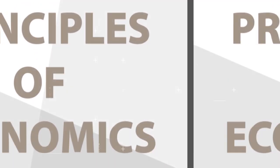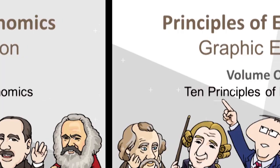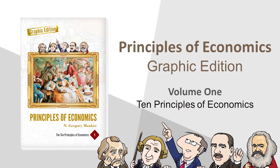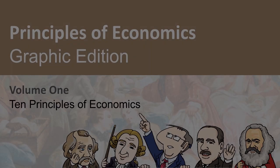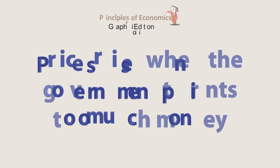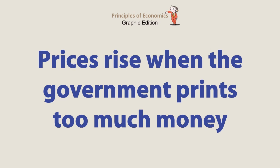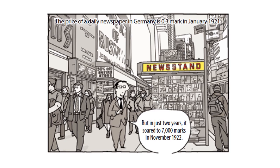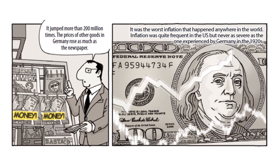The price of a daily newspaper in Germany was 0.3 mark in January 1921. But in just two years, it soared to 7,000 marks in November 1922 — a jump of more than 200 million times. The prices of other goods in Germany rose just as much. It was the worst inflation that happened anywhere in the world.